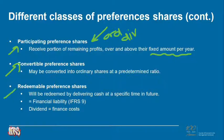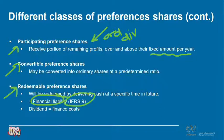Redeemable preference shares are a financial liability instrument. They will be redeemed by delivering cash at a specific time in future, so the shareholder will receive cash back on this investment. It is considered a financial liability accounted for in terms of IFRS 9, and the dividend on this instrument will be regarded as a finance cost.